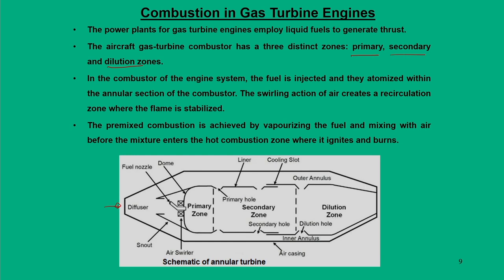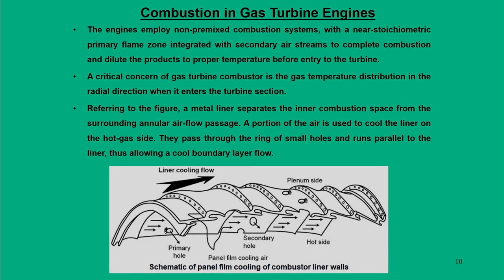In the entire combustor, different zones serve different purposes. After the sustained flame is initiated in the primary zone and moves through the annular sections, a regulated, tailored flame must be generated before it enters the turbines, where all combustion products must be complete. The secondary and dilution zones play a prime role here.